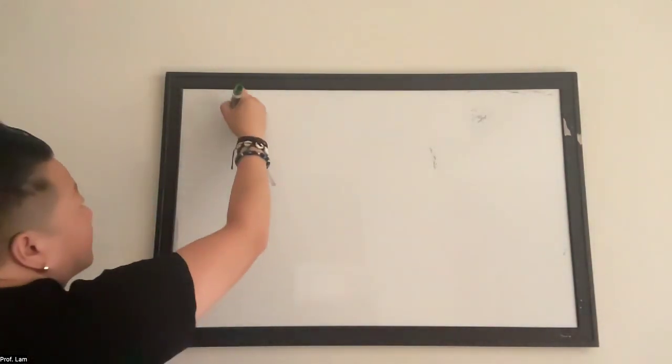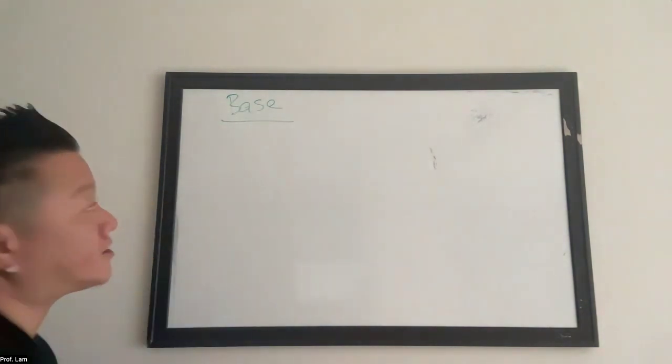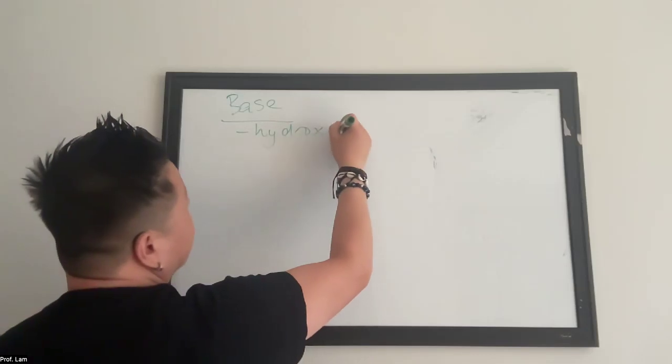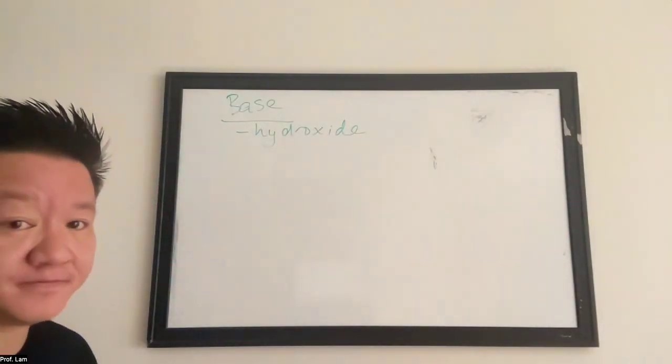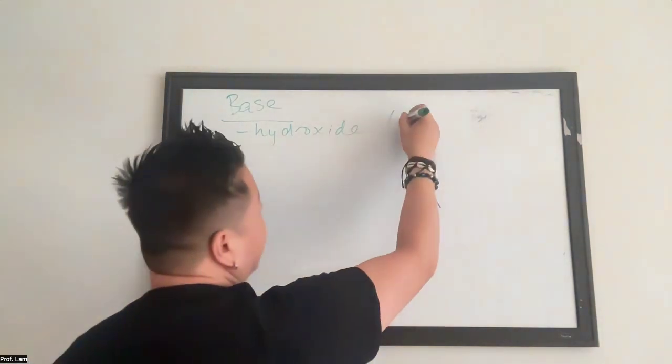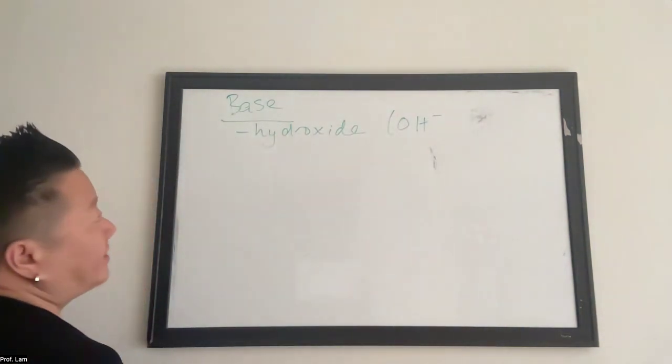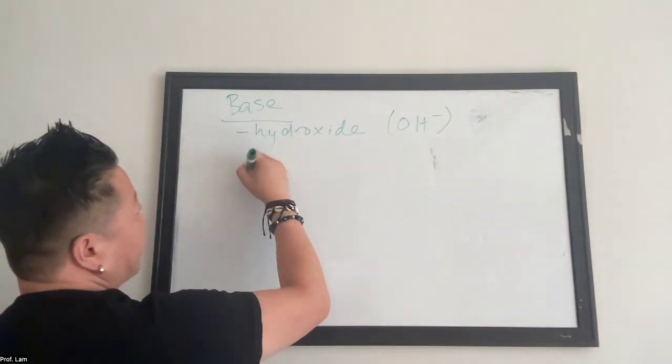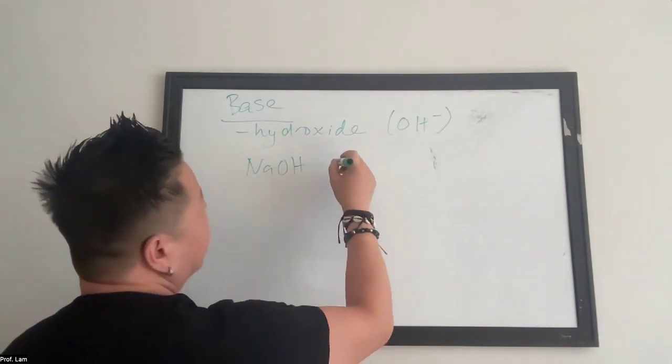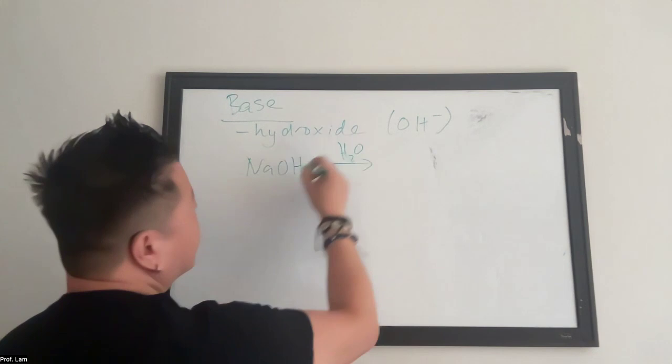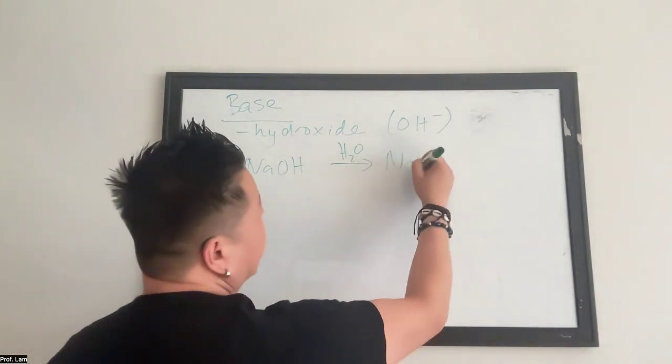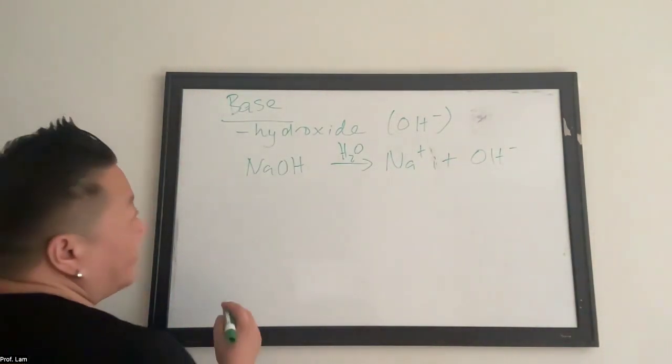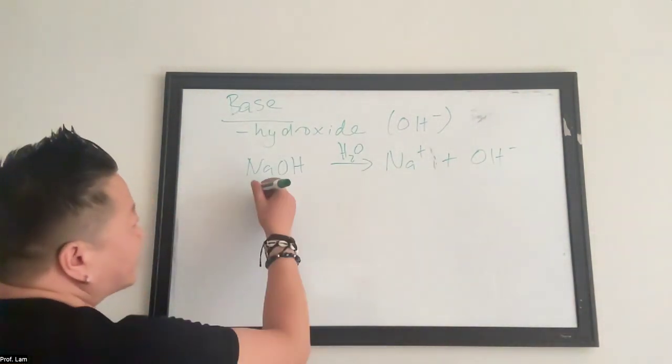Actually, let's quickly also say what a base is. A base is anything that is hydroxide. So remember hydroxide, OH minus. So something like sodium hydroxide. When you put it in water, it's going to dissociate into its ions. Sodium plus and OH minus. So this we considered a strong base.